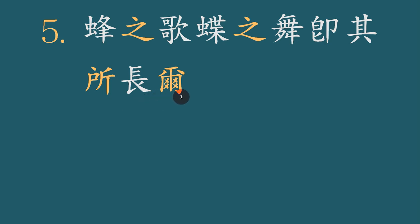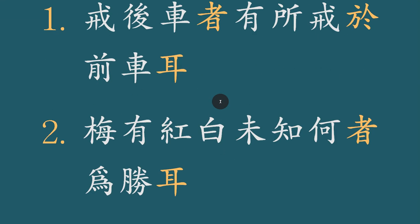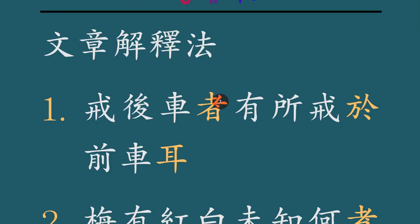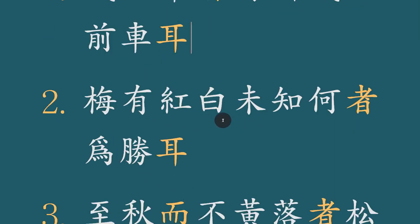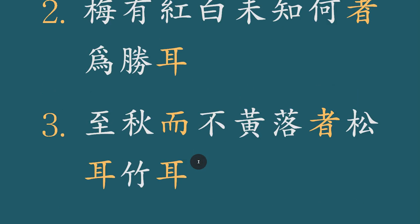여기까지 문장을 한번 읽어 보겠습니다. 개후거자는 유속해여전거이람, 매유홍백하니 미지하자 미승이람, 지추이 불황낙자는 송이죽이람.